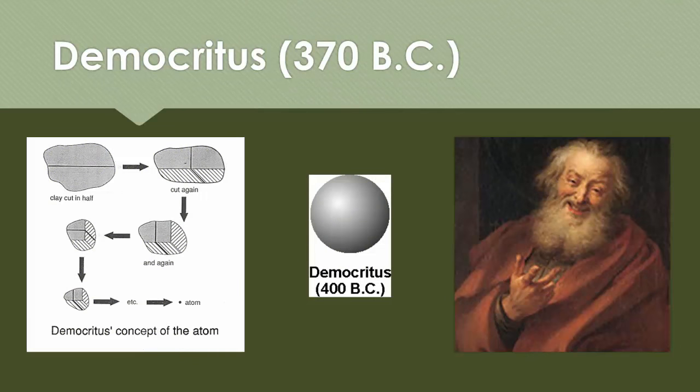If you were to take one item and then keep breaking it in half and half and half again, that smallest piece of matter, Democritus thought, he assumed that was what he calls the atom.